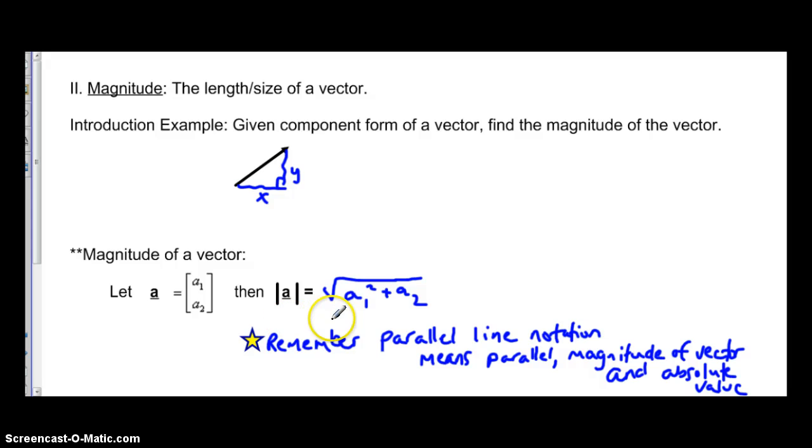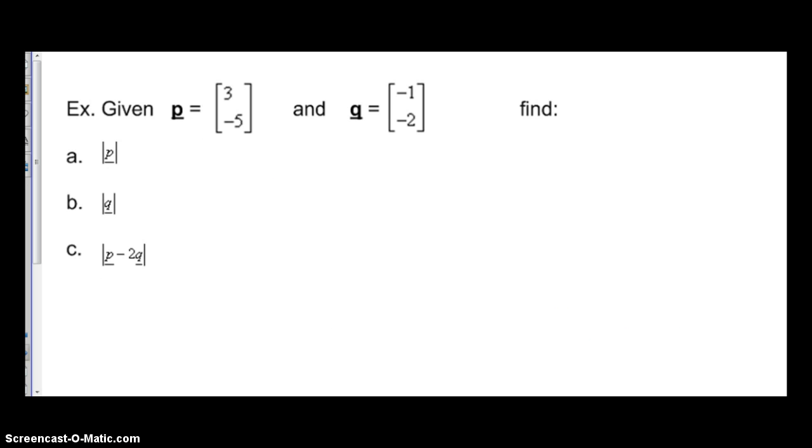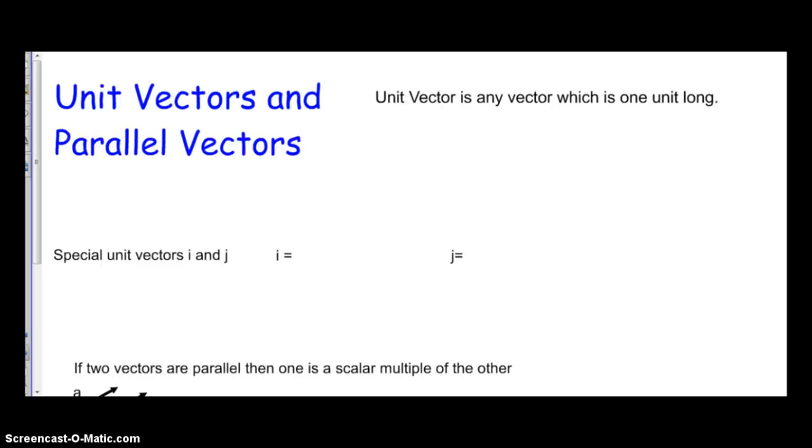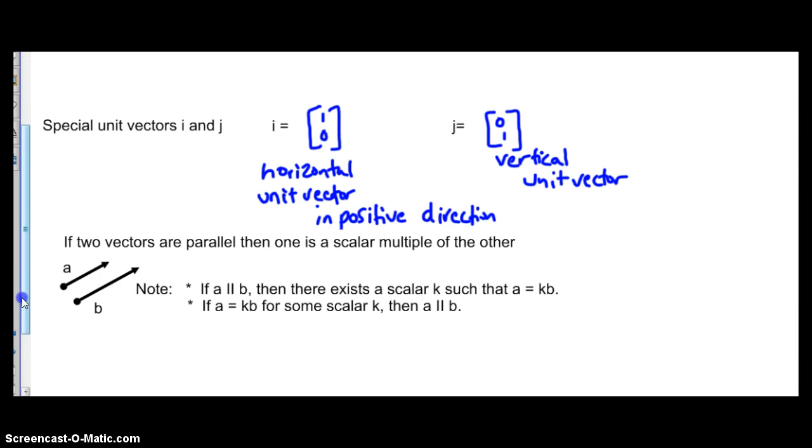The formula would be the square root of the X component squared plus the Y component squared, just like we would use the Pythagorean theorem because we're solving for the hypotenuse. There's a couple examples. I think we'll do these in class.